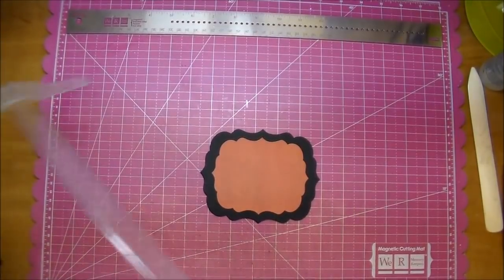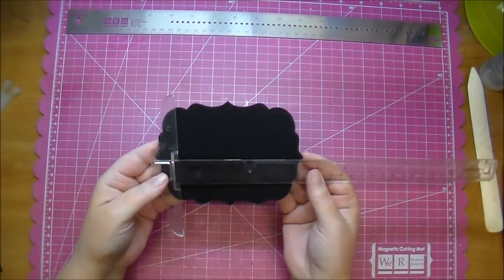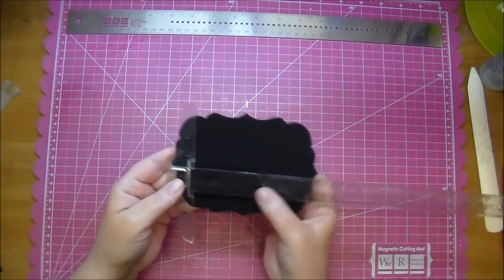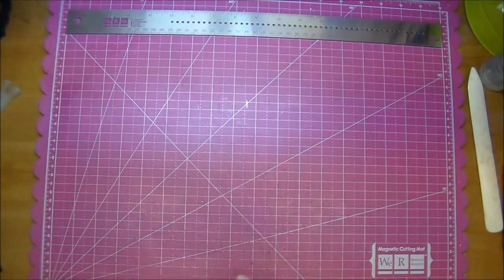So the next thing we want to do is see what size accordion book we can fit behind it. So you want to measure it out and see what will fit. So I've determined that 4 1⁄4 by 3 1⁄4 should fit nicely.